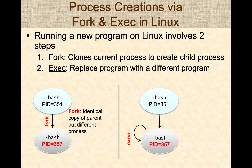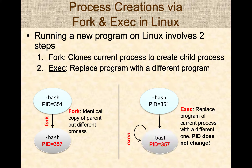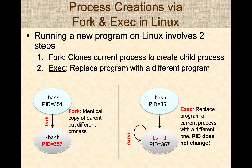In the next step, bash then calls the exec system call and replaces the currently running process — in this case bash — with a different program, say ls-l. Notice that now a new program starts running, but the process still remains the same. That means the process ID and other values like open streams and such will remain the same. We are going to do a deeper dive into how fork and exec work and how to use them in programs.